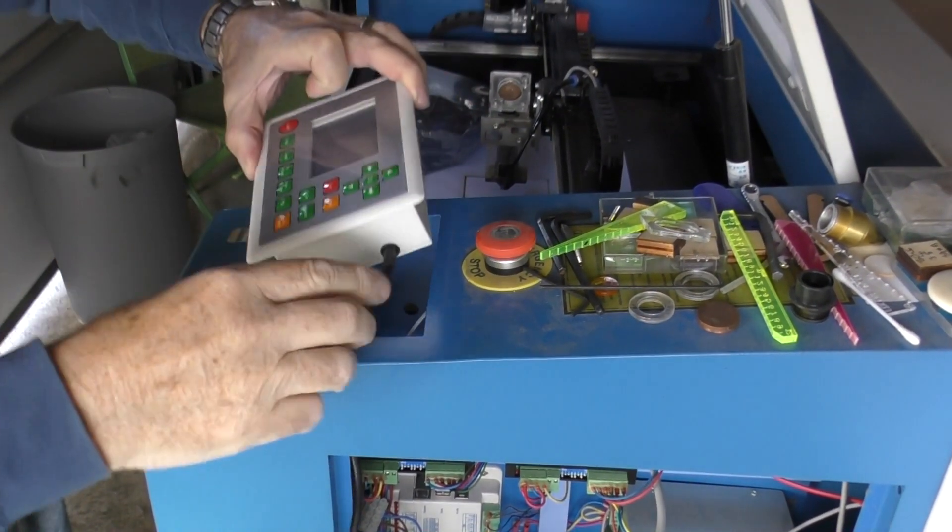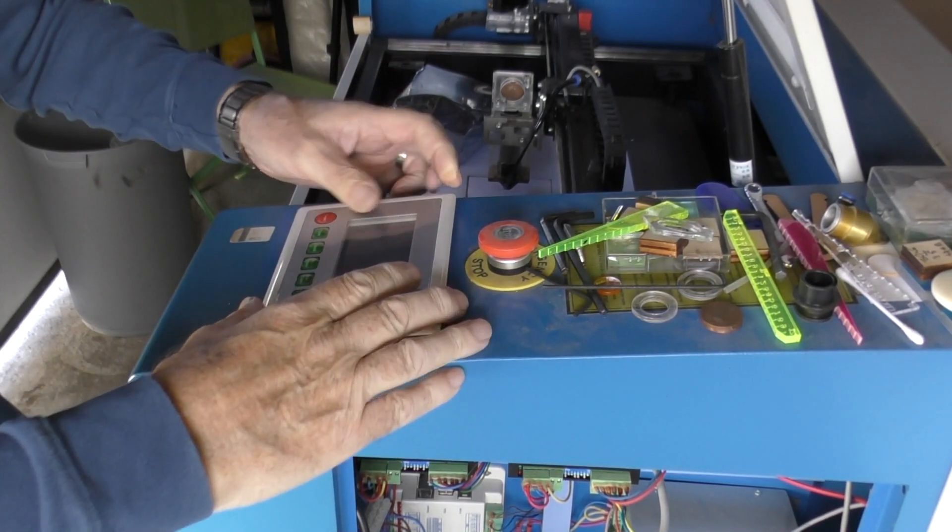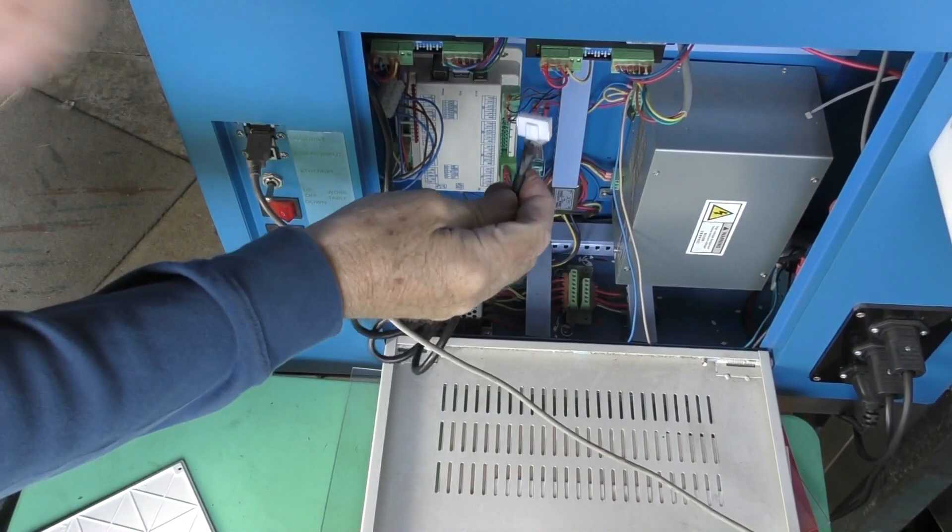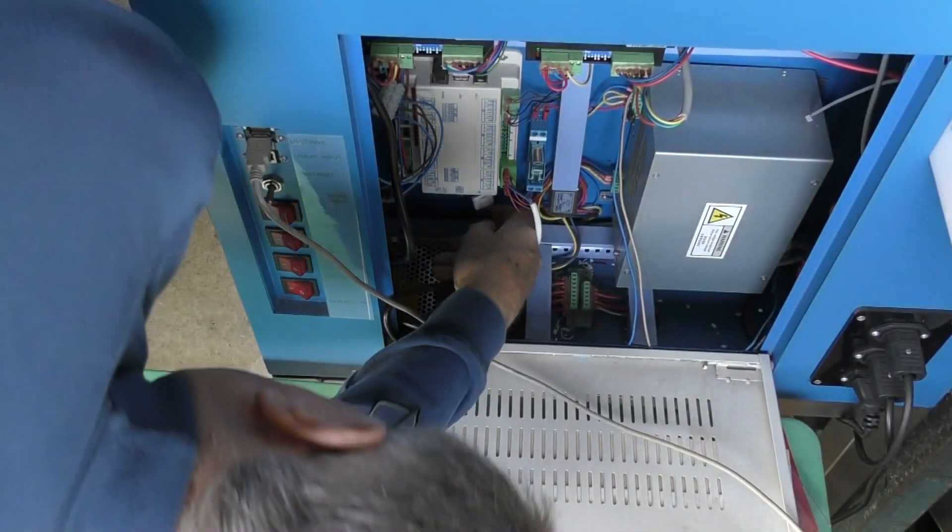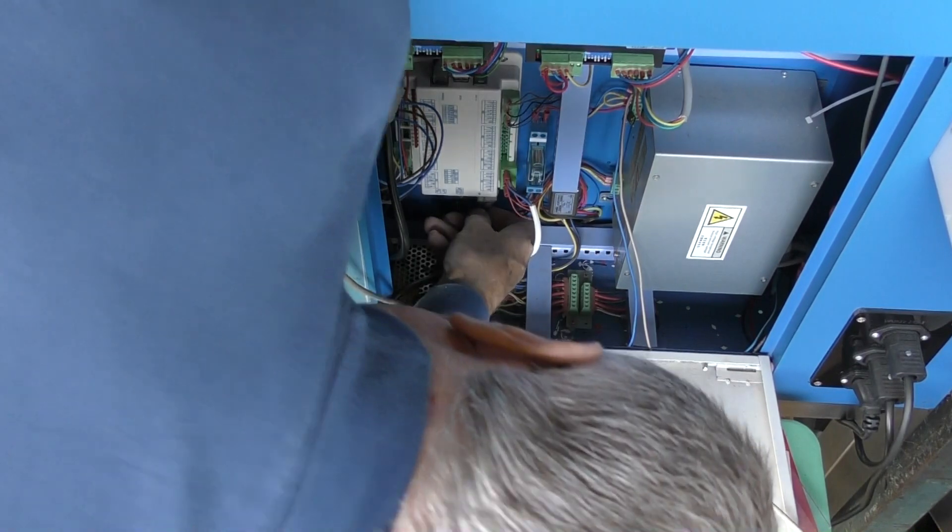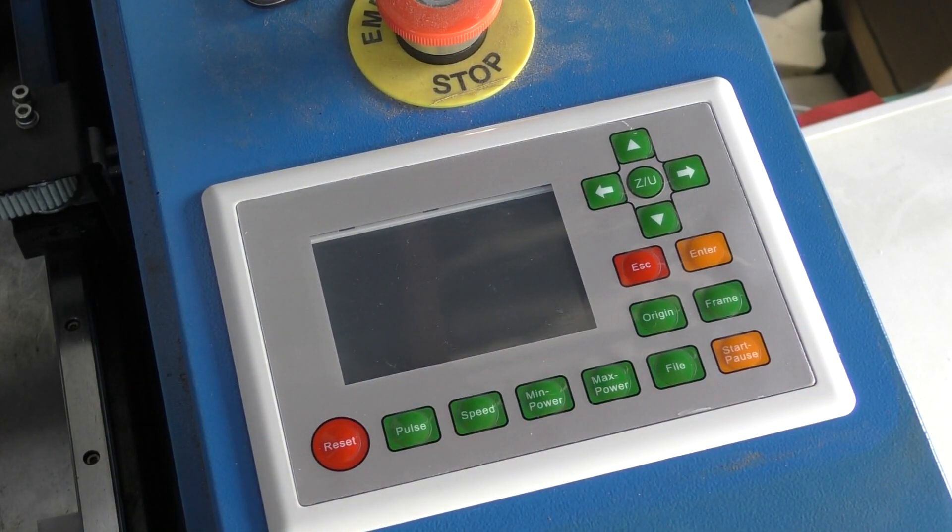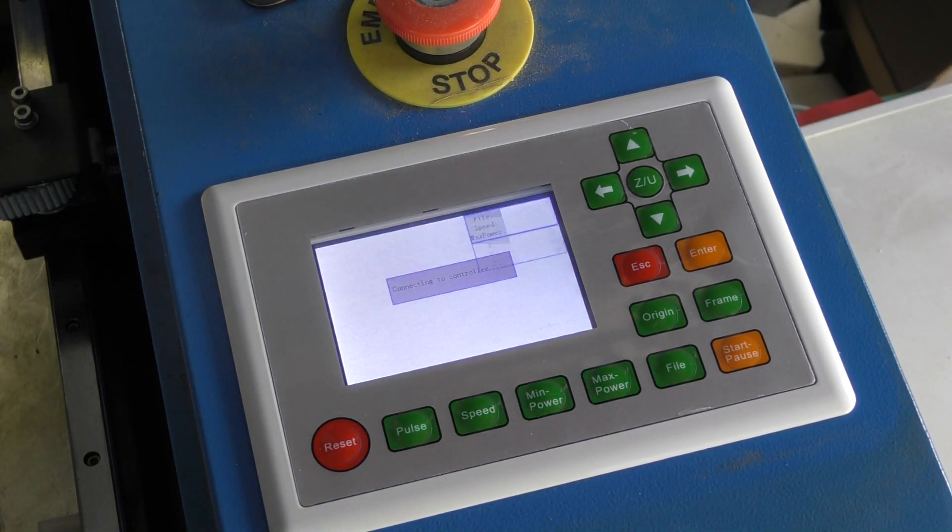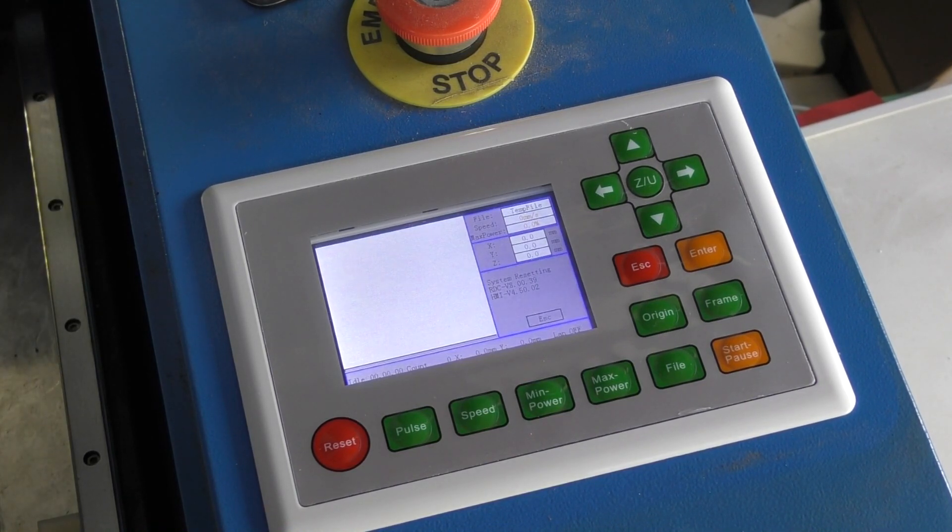We just slip the new one in. Then it should just be a matter of plugging that into the bottom of the controller, if you can see what you're doing. So let's turn power on and see if it's as simple as that. Aha! We have a machine again.